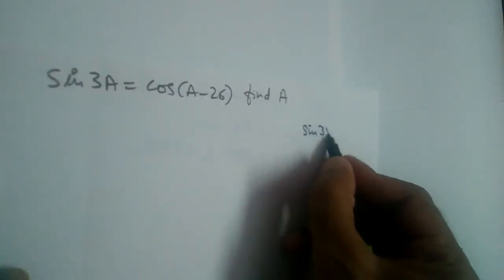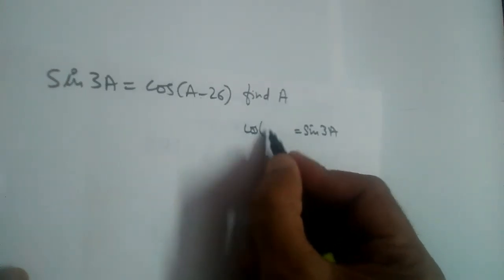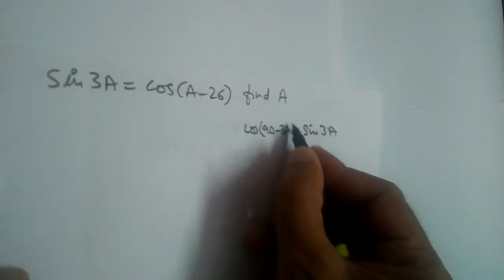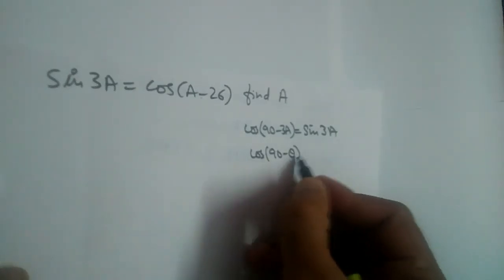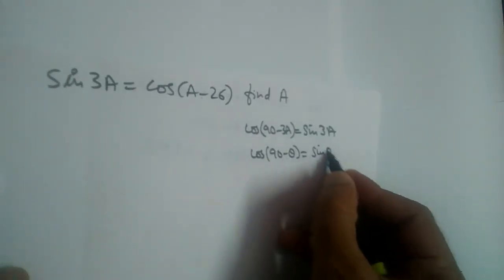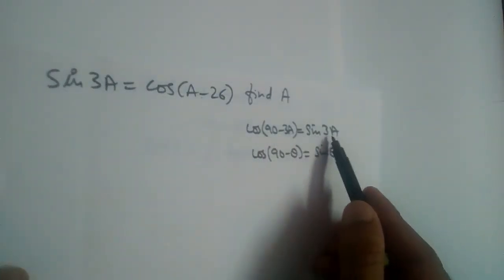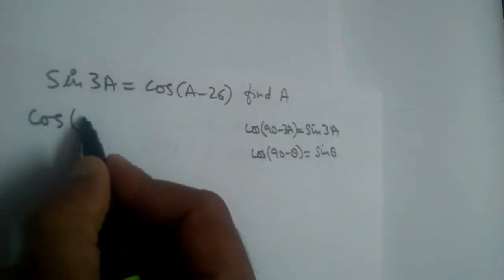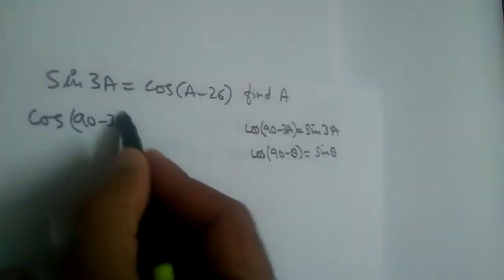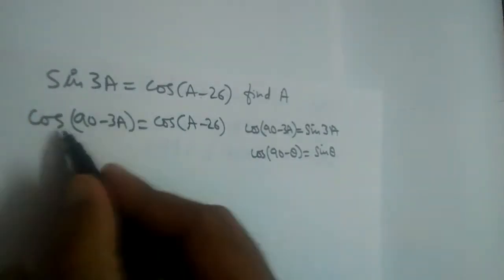How can we write sine 3a? Sine 3a can be written as cos(90 - 3a) because cos(90 - theta) equals sine theta. So cos(90 - 3a) equals sine 3a. That's why in place of sine 3a, let us write cos(90 - 3a). This equals cos(a - 26). Both are cos values now.